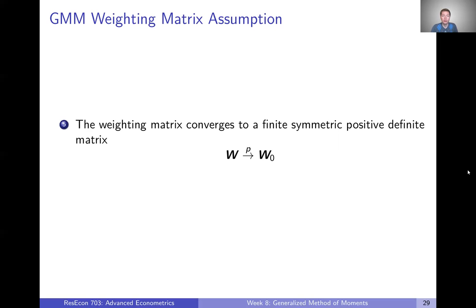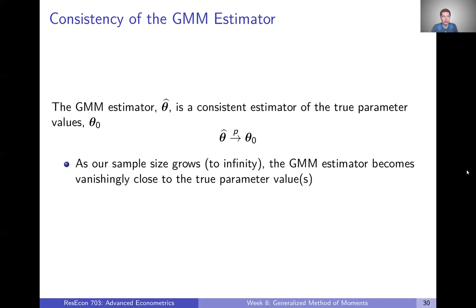I think just knowing that the proofs hold and what the properties are is going to be most relevant to most applied researchers. So the two properties here, once again, consistency. So our GMM estimator theta hat is a consistent estimator of the true parameter values theta zero. Or to say that differently, as our sample size grows to infinity, basically the GMM estimator becomes vanishingly close to the true parameter values. So that's kind of like the lowest bar that we want to have for an estimator. If it's not getting us consistent estimates, then we might wonder why it's a useful estimator.